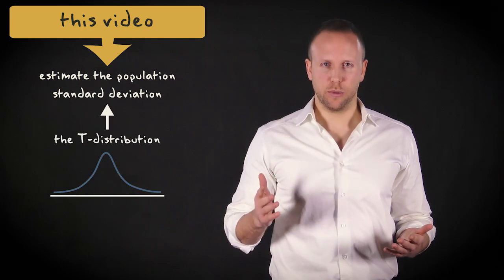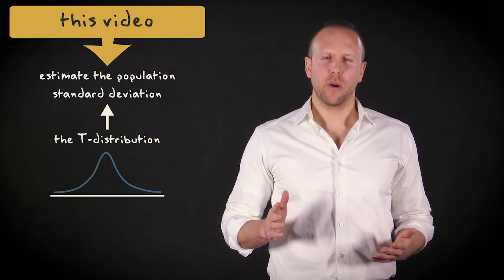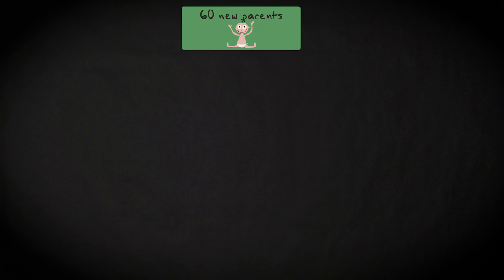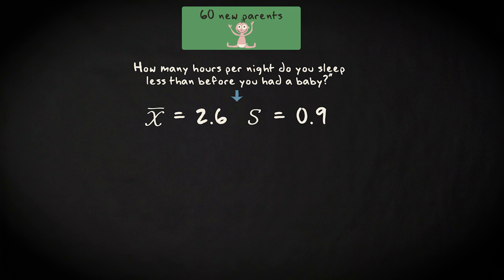It is the t-distribution. Let me tell you how that works. Imagine we've asked a sample of 60 new parents in Amsterdam how many sleeping hours they lost after their first children were born. The mean is 2.6 hours, and the standard deviation is 0.9 hours.